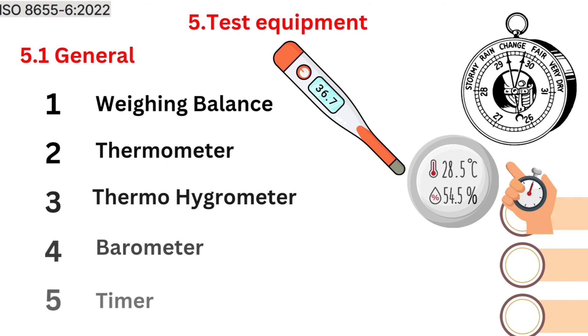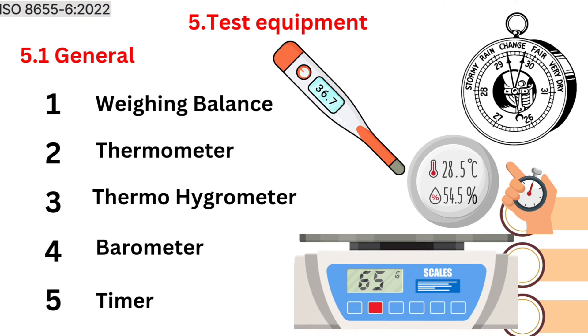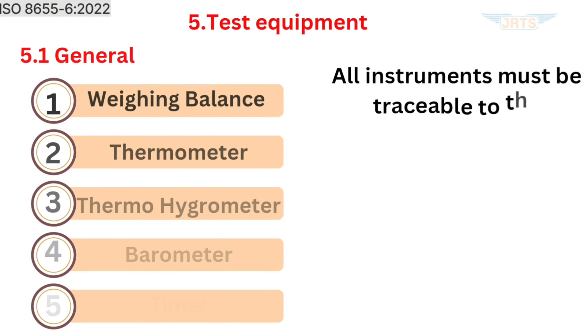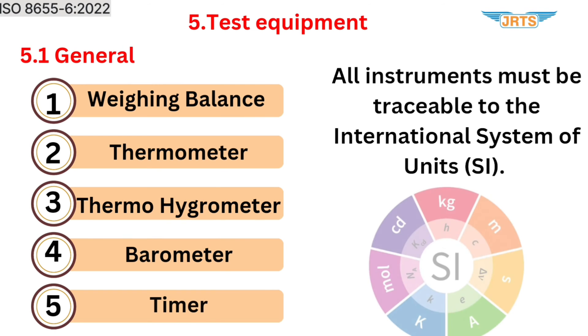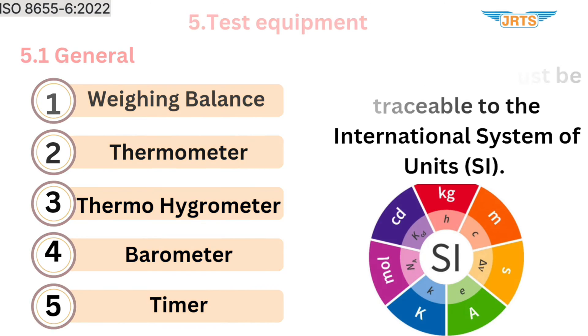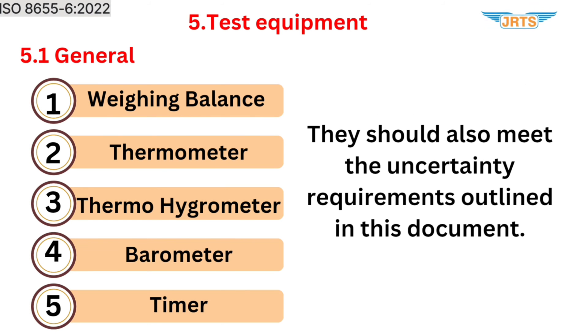Section 5, Test Equipment: (1) weighing balance, (2) thermometer, (3) thermohygrometer, (4) barometer, (5) timer. All instruments must be traceable to the International System of Units (SI) and shall meet the uncertainty requirements outlined in this document.